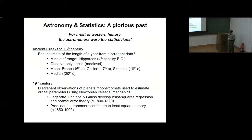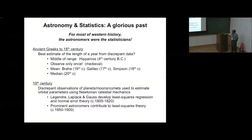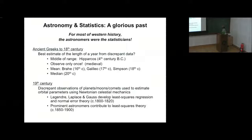Galileo's computations had rudiments of the so-called mean absolute deviation method. Laplace and Gauss developed least squares regression to find a curve or line to fit data with various errors, and quite a number of astronomers contributed to least squares theory.